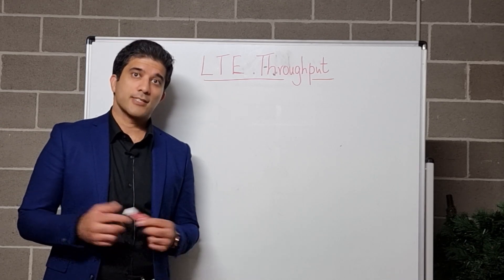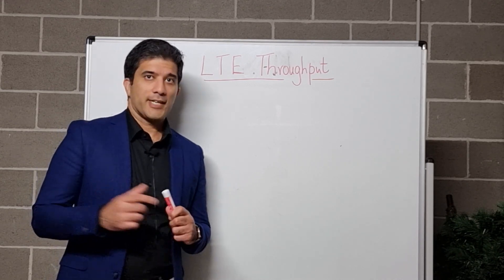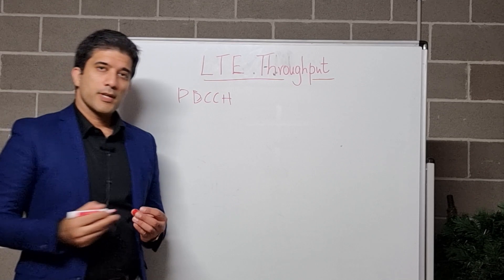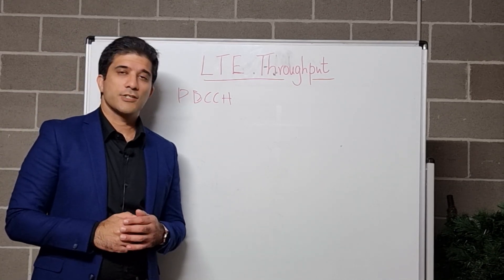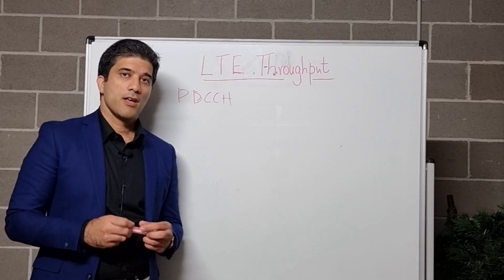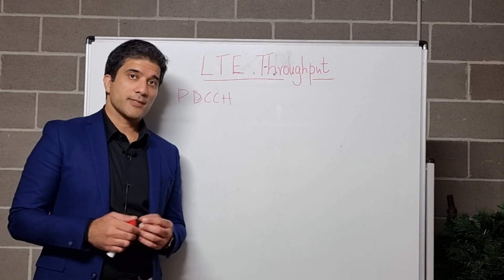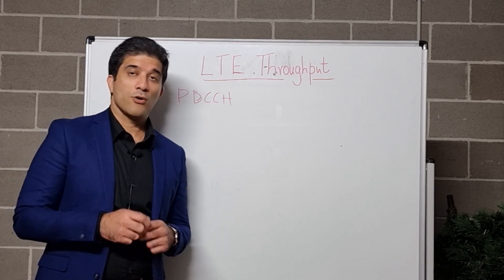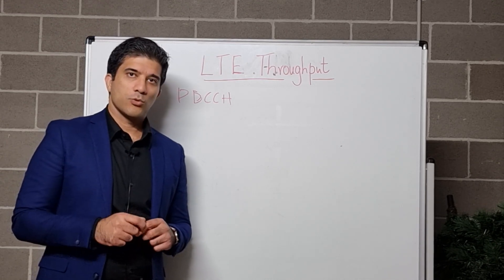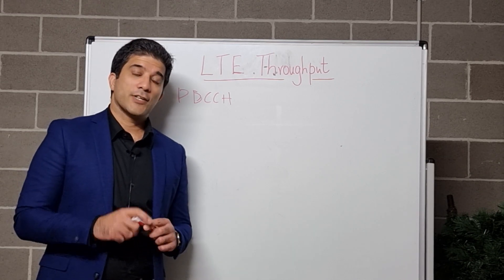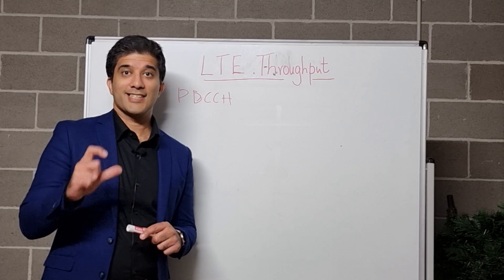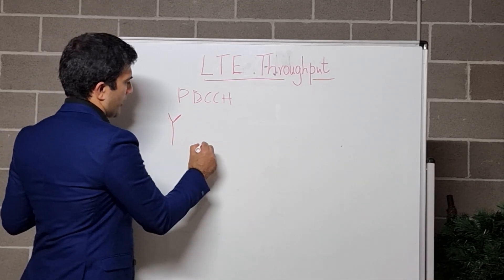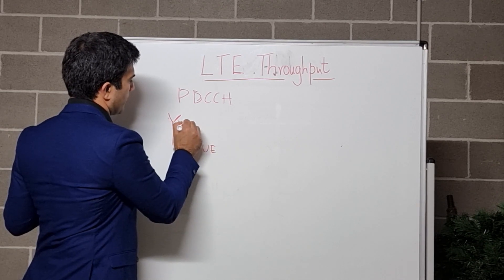Another important aspect which can have a massive impact on your throughput is your PDCCH channel — the Physical Downlink Control Channel. PDCCH is actually used by the eNodeB to communicate to your UE that there is data in the buffer that is being scheduled for that particular UE. It will give that information in terms of a particular format and tell the UE in which particular resource block this data is going to be transmitted. You can see that this is your base station, this is your UE, and this is your downlink PDCCH.